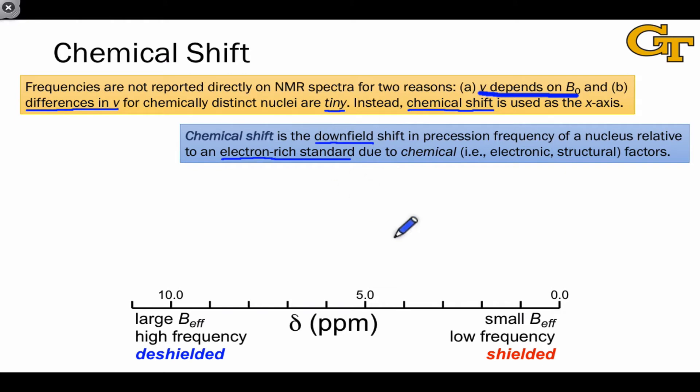Because chemical shift is defined as a downfield shift, heavily shielded nuclei appear at low chemical shift on the right-hand side of spectra, while heavily deshielded nuclei appear on the left at relatively high chemical shift. The units are parts per million, or ppm. You should ask: parts of what per million of what?